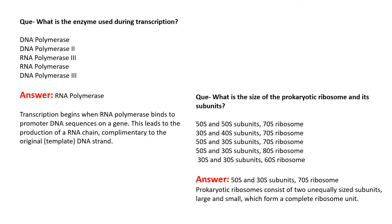The next question is: what enzyme is used during transcription? The options are DNA polymerase, DNA polymerase 2, RNA polymerase, and RNA polymerase and DNA polymerase 3. The answer is RNA polymerase. Transcription begins when RNA polymerase binds to the promoter DNA sequence on a gene, leading to synthesis of an RNA chain complementary to the template DNA strand.